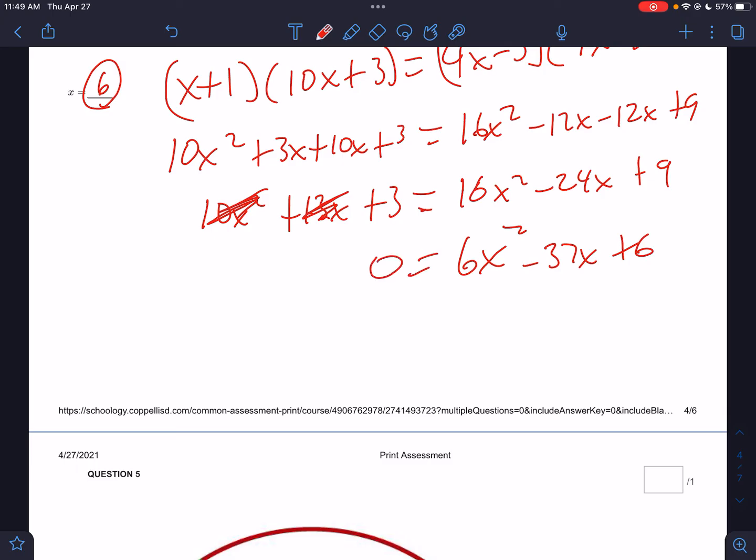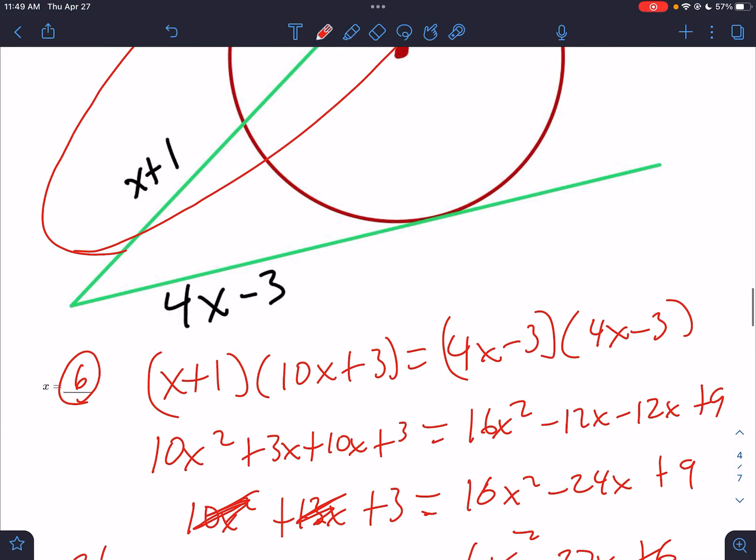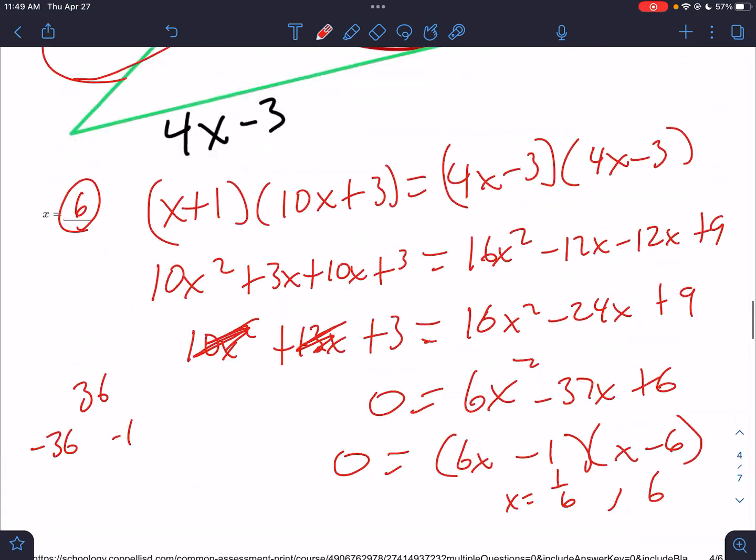Now we're factoring. 6 times 6 is 36. What factors of 36 add to 37? It's going to be 36 and 1. I need them both negative. How do I get 36 and 1? Does 6 and 1 get me that? Yes. 6 times -6 is -36, 1 times -1 is the other one. So what are my solutions? This would be adding 1 divided by 6, and this would be adding 6.